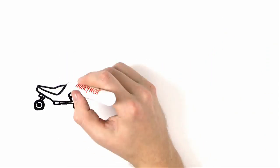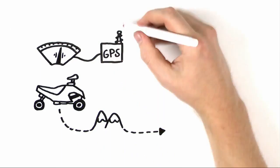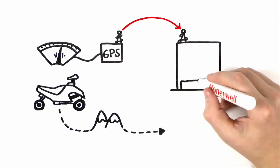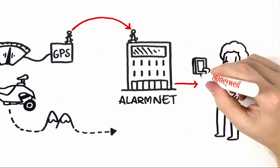For instance, say the ATV is moved. The built-in accelerometer activates the GPS and a signal is transmitted to Honeywell's AlarmNet Network Operating Center and then sent right to the palm of your hand.